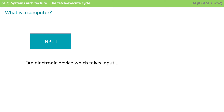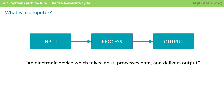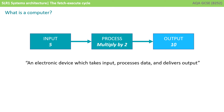A computer is defined as an electronic device that takes an input, processes data, and delivers output. In this simple example you can see we're taking the input 5, we're multiplying it by 2 — that's our process — and we're outputting 10.